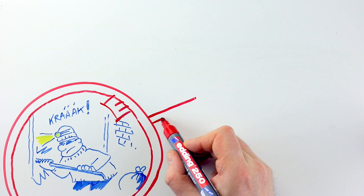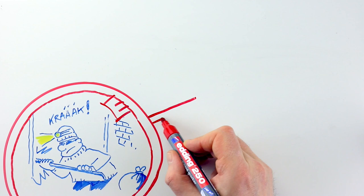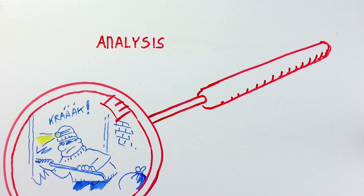That is why the second SARA step, the analysis, digs deeply into the primary safety concern, for example, a hot spot or a group of offenders. Such a problem analysis focuses on the three sides of the so-called crime triangle.